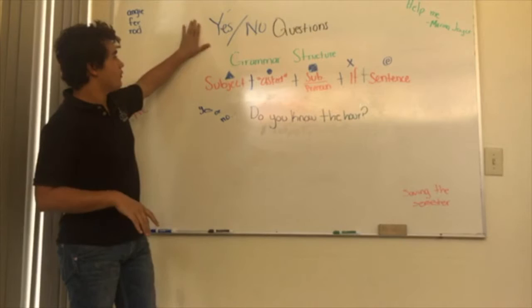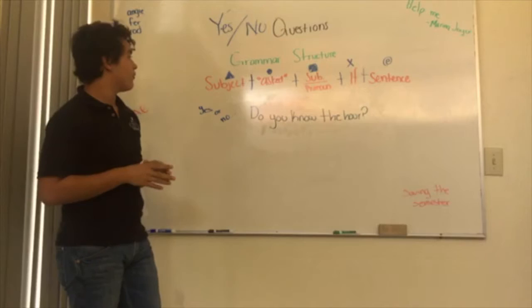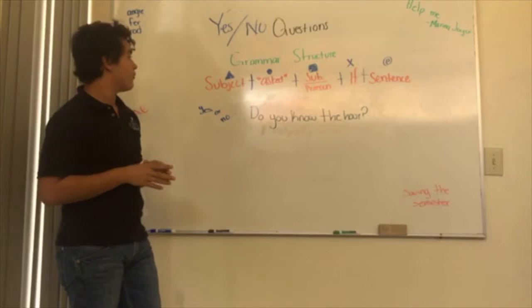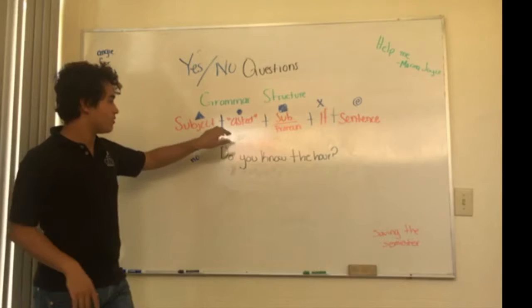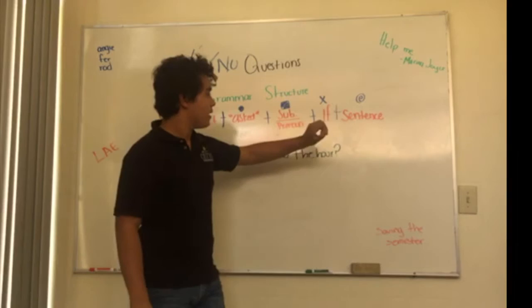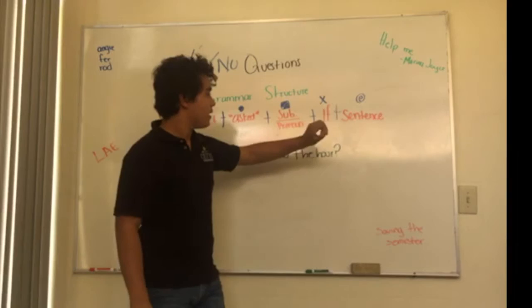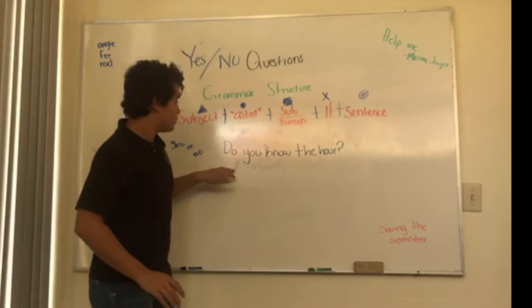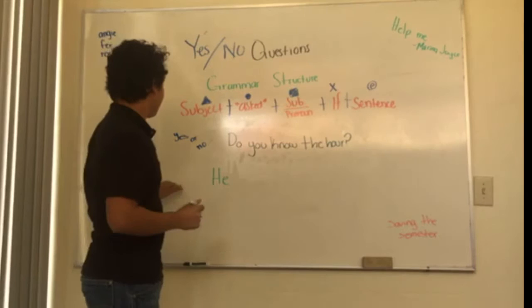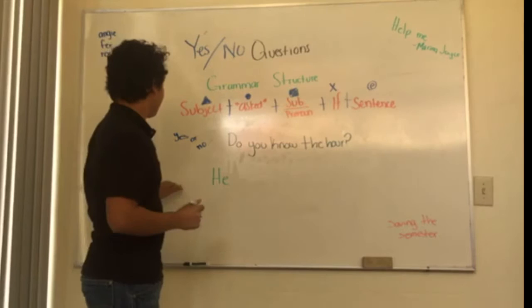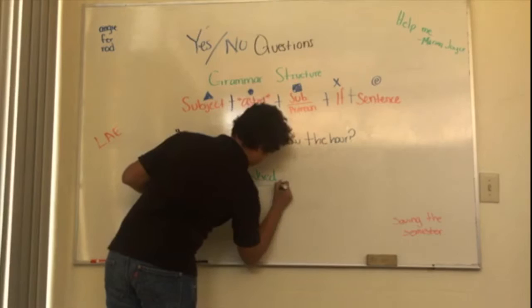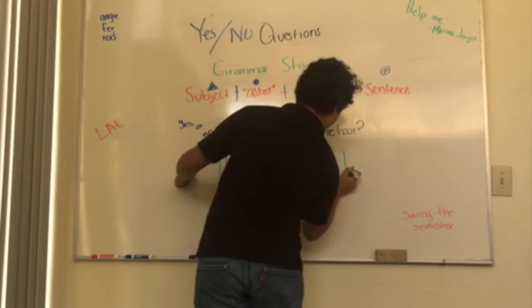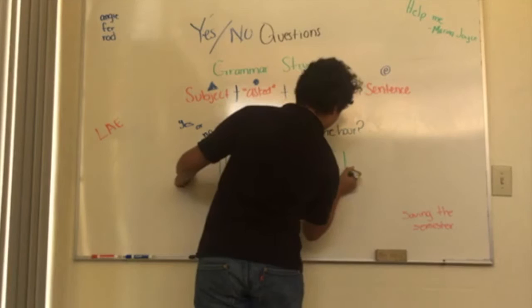Another way of asking a reported question is with yes or no questions. The grammar structure for these is: first the subject — she, it, or something else — then 'ask', then the subject pronoun — me, him, or her — then 'if', because yes or no questions need the word 'if', and then you put the sentence. For example: 'Do you know what time it is?' becomes 'He asked me if I knew the hour.'